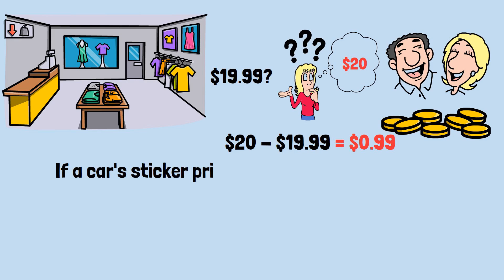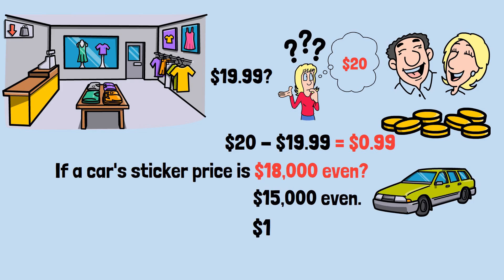If a car's sticker price is $18,000 even, you might counter with $15,000 even. But a car at $17,800 anchors you into countering in hundreds, not thousands. See what they did there?